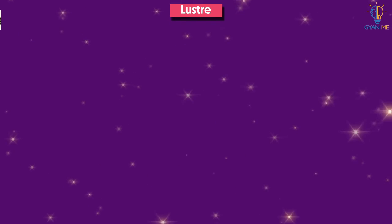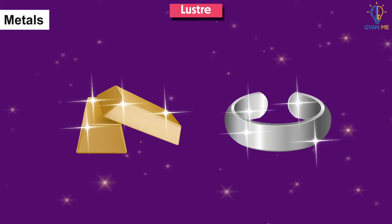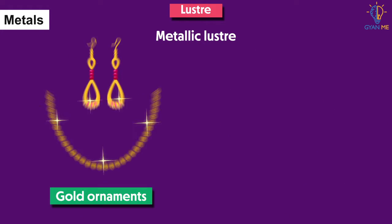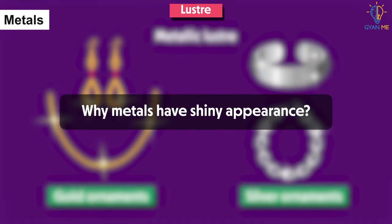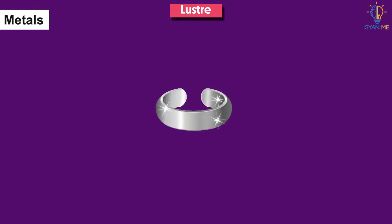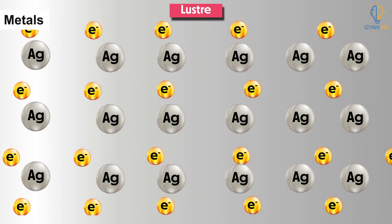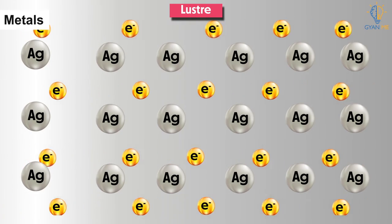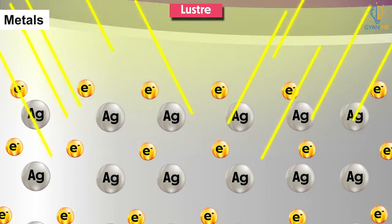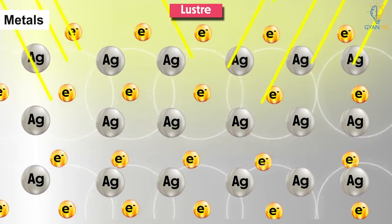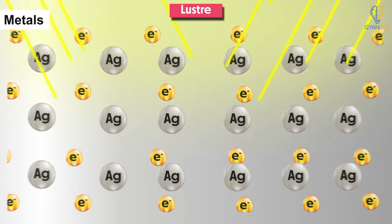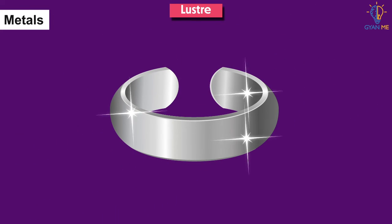The third property is lustre. We all know that metals have a shiny appearance called metallic lustre — for example, gold ornaments, silver ornaments, etc. Do you know why metals have such a shiny appearance? It is due to the oscillation of free electrons. Metals have free electrons in their atoms. When light falls upon these free electrons, they absorb energy and are set into oscillation, and they emit out radiation. That is responsible for the metallic lustre.